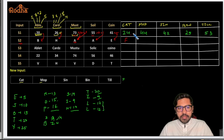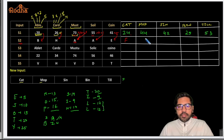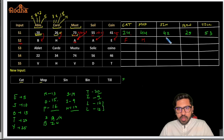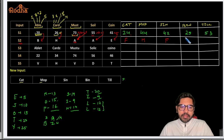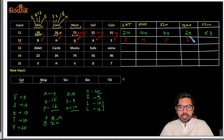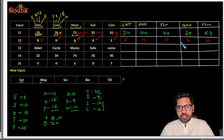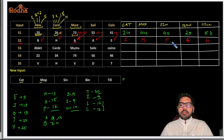Applying step two to the new input: for 24, two plus four is six — sixth alphabet is F. For 44, four plus four is eight — eighth alphabet is H. For 42, four plus two is six — again F. For 25, two plus five is seven — seventh is G. For 53, five plus three is eight — again H. So step two gives: F, H, F, G, H.